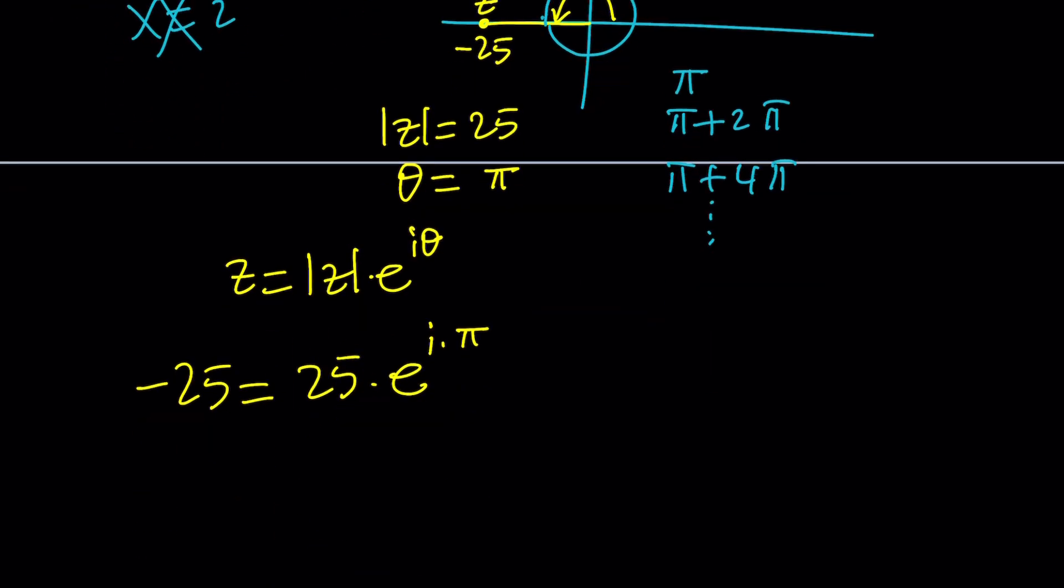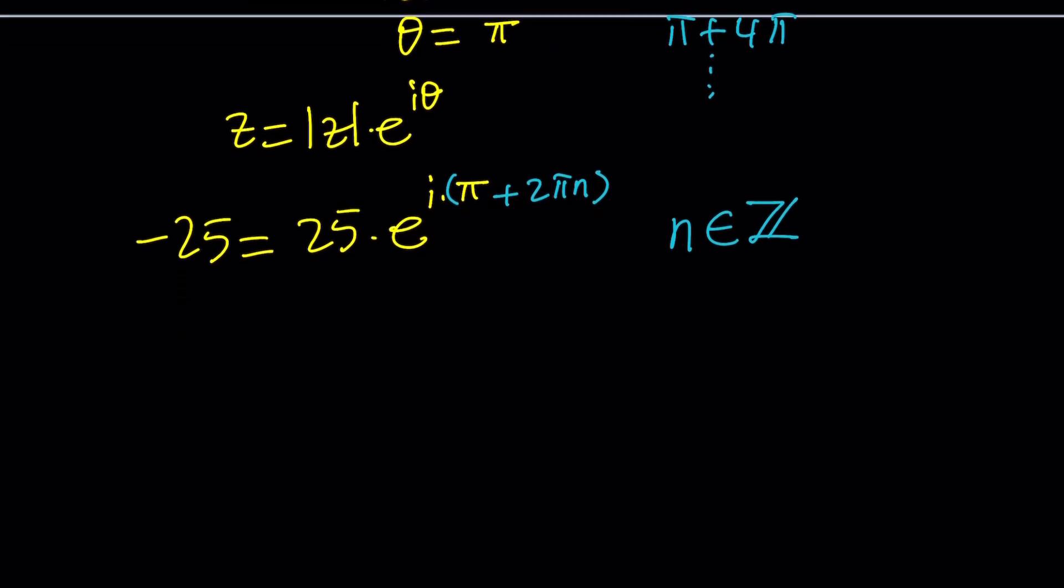So instead of using a pi there, let's go ahead and add multiples of 2 pi to this, which can be written as 2 pi n, and then multiply this whole thing by i. So in this case, n is an integer. So n is an element of the special z symbol. Okay, so I just heard from my viewers that it means zahlen, which means, I think, numbers in German.